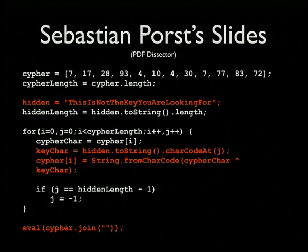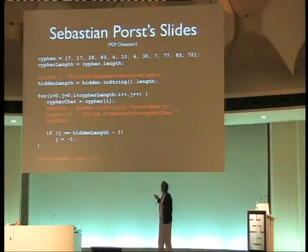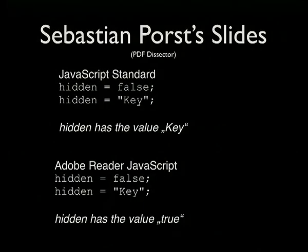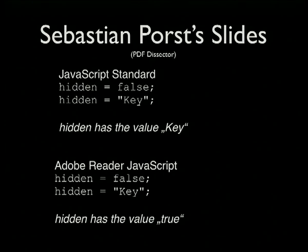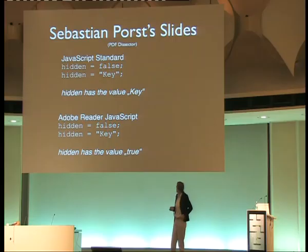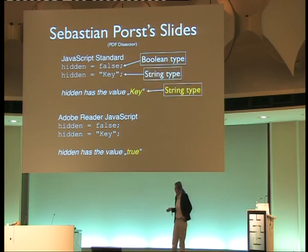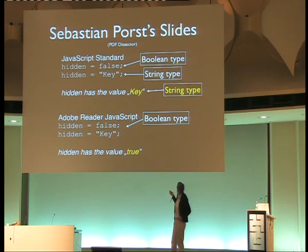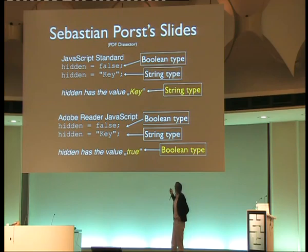There's a funny thing about the JavaScript engine in Acrobat: there are slight differences from how it behaves in a web browser. If you define a global variable as a particular type and then reassign it a different type later, in web browsers it becomes the new type. But in Acrobat, for some reason it retains the original type. So if you make a variable a boolean and then assign it a string, a web browser says it's a string, but Adobe Acrobat keeps it as a boolean. If you're using SpiderMonkey or a similar engine, you need to be aware of this.